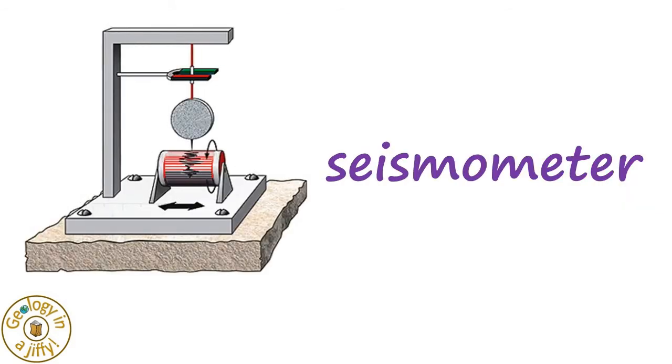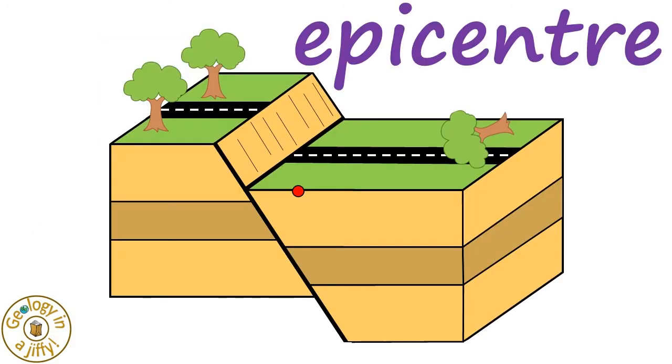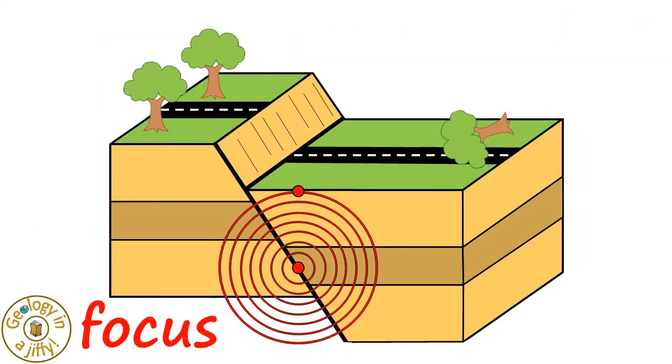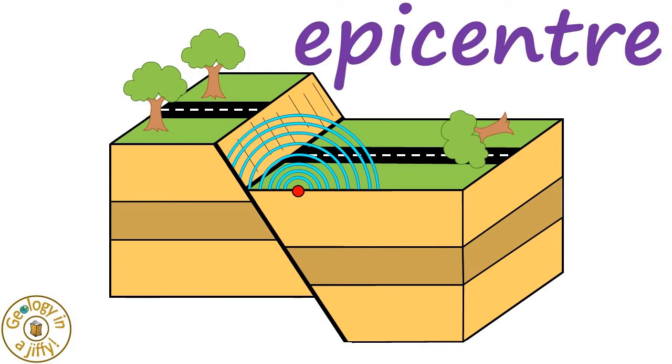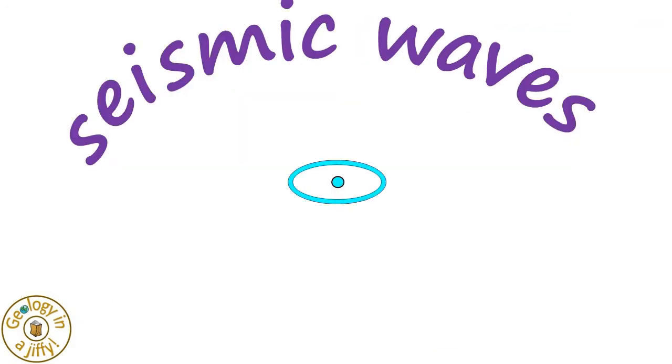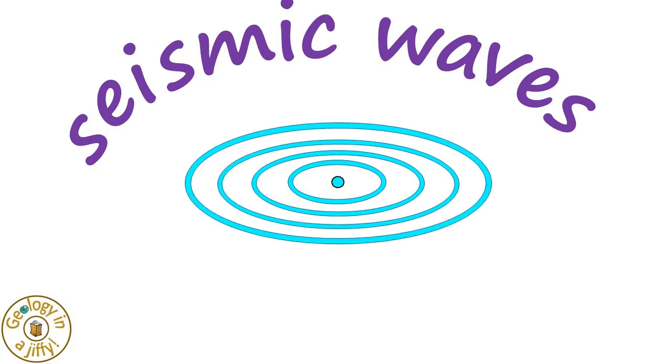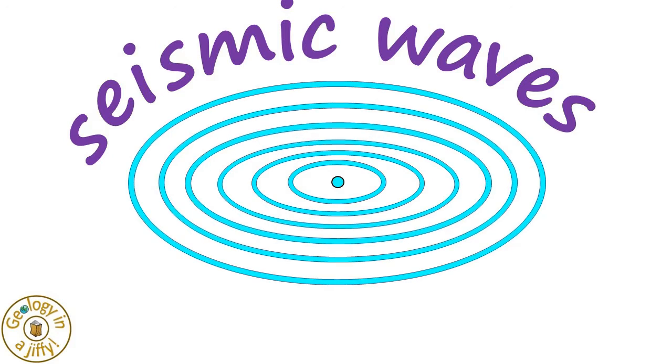Richter used a seismometer to record actual Earth movement, recording movement at distances from the epicentre of the earthquake, the point at the surface directly above the focus of the earthquake. The epicentre is where the shaking is most intense, with seismic waves spreading outwards from the epicentre, decreasing in energy the further they are from the epicentre.